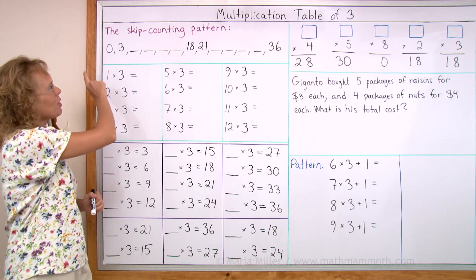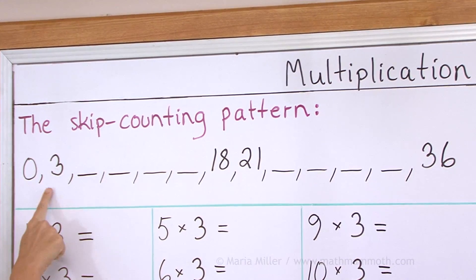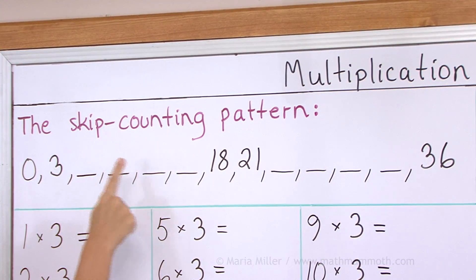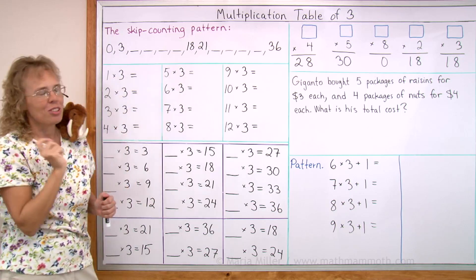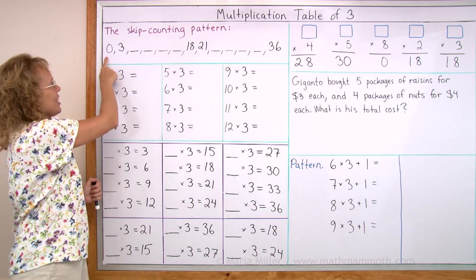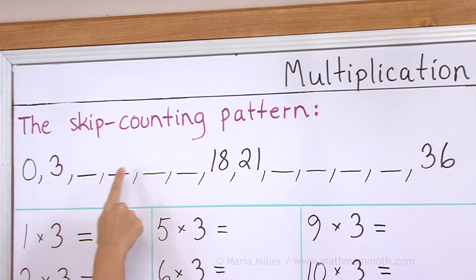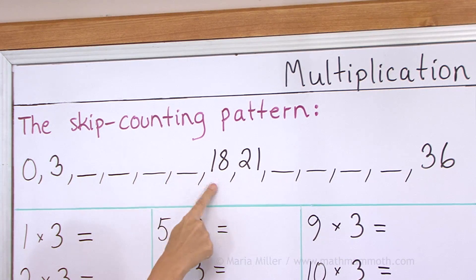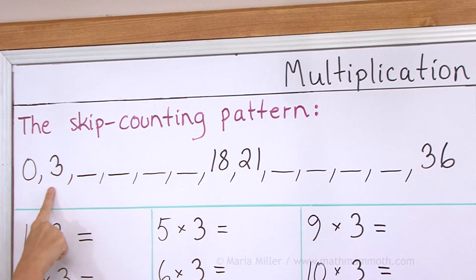Let's go first — the first half of it: 0, 3, 6, 9, 12, 15, 18. Now that's not too difficult. 0, 3, 6, 9, 12, 15, 18. Now it's your turn to say it. 0, 3...